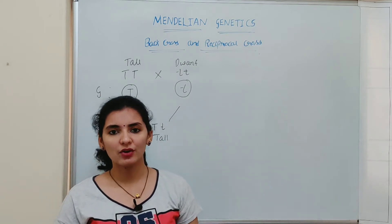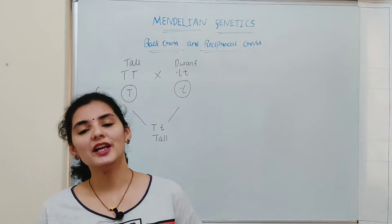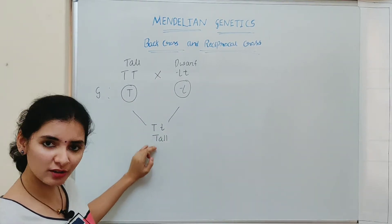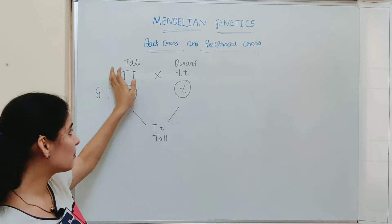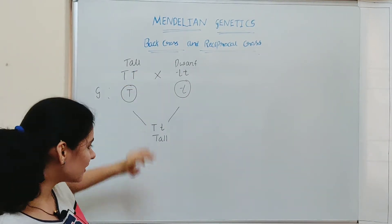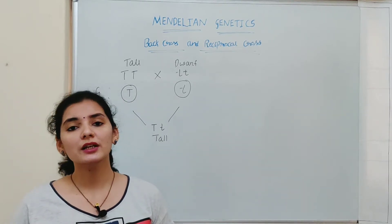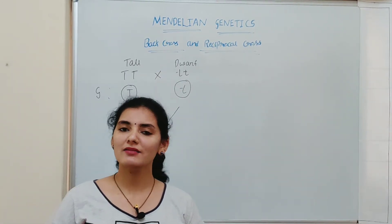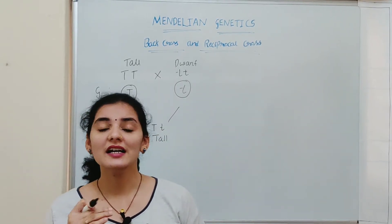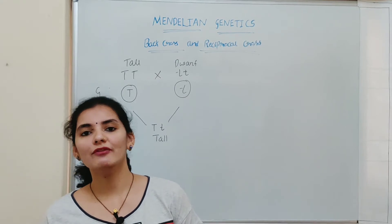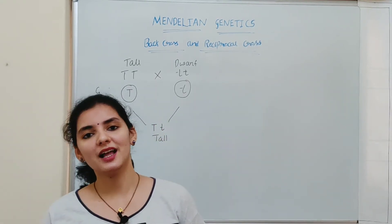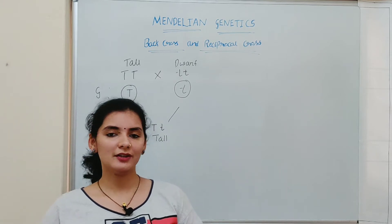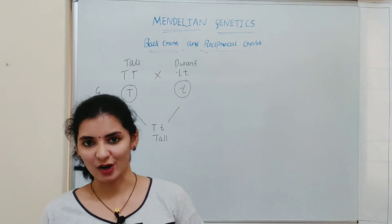The significance of back cross is to develop offspring with a genetic identity similar to that of the parent, because crossing back to a parent causes the parental traits to reappear in the offspring. Back cross is also used in animals to obtain a beneficial or desired trait from an animal with a poor genetic background by crossing it with one that has a good genetic background, so that desirable trait reappears in the offspring.